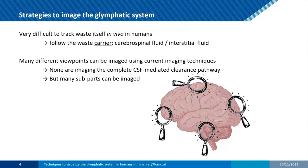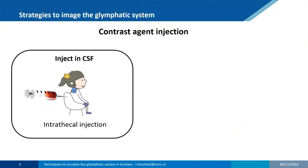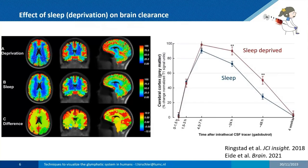The current gold standard in humans is contrast agent injection, where you inject a gadolinium compound intrathecally into the spine, then follow this tracer as it flows in the brain with sequential imaging over time. Here you can see an example of that — this work is mainly done by the group of Geir Ringstad in Oslo.